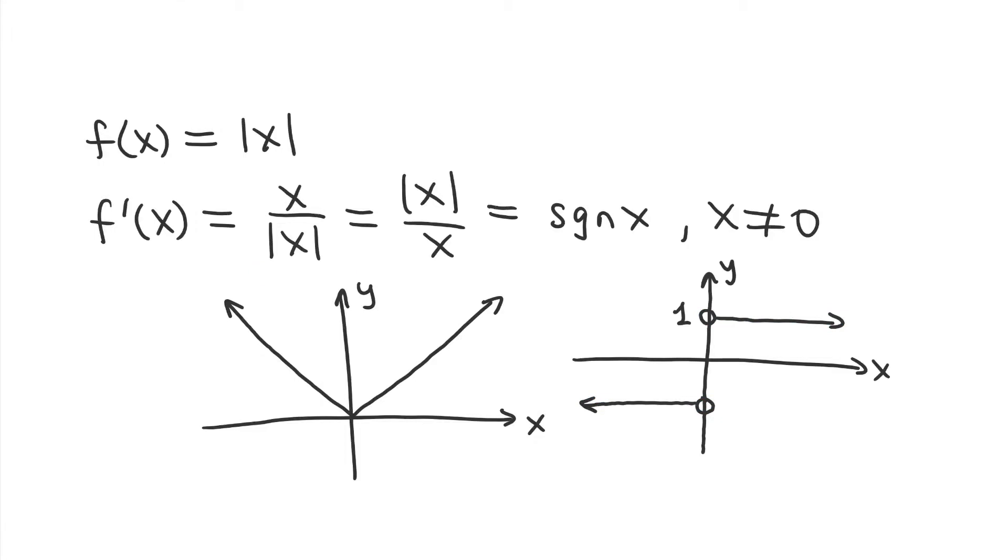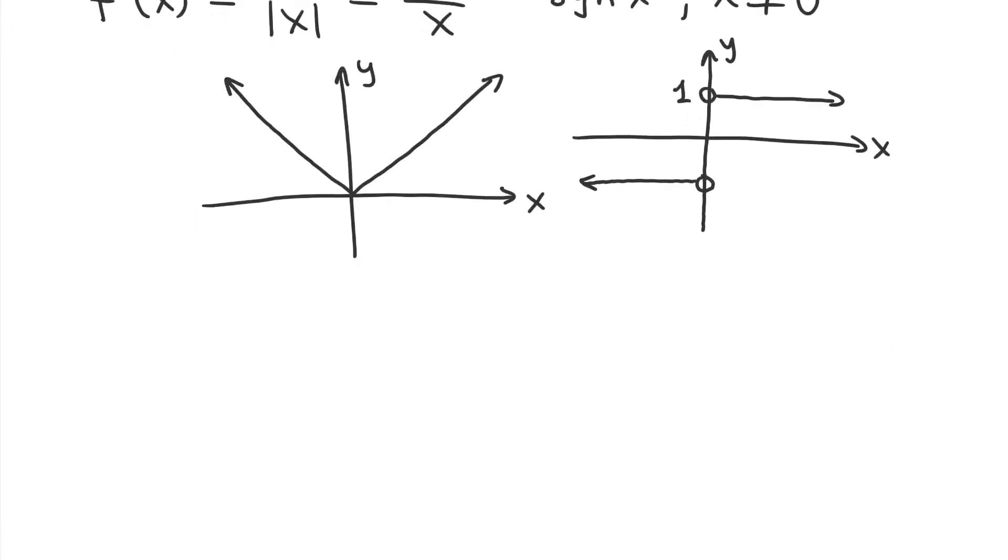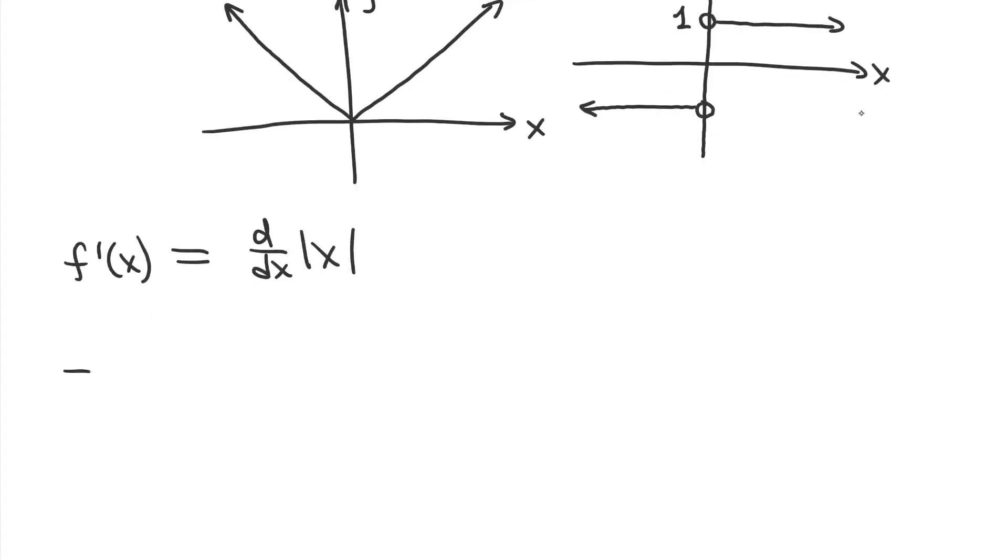So, with the limit definition. So, here we go. The derivative of our function x, which is the absolute value function, we could also write this as d dx absolute value of x, is equal to the limit as h goes to zero, of course, of the function evaluated at x plus h. In other words, we just plug in x plus h for x, minus the original function, all divided by h.